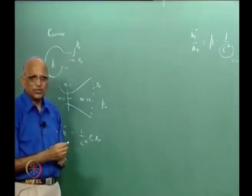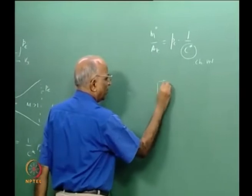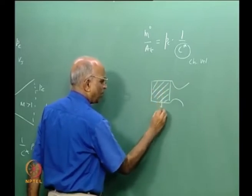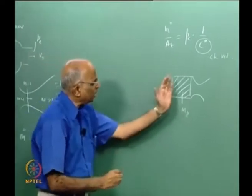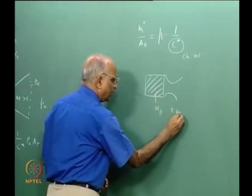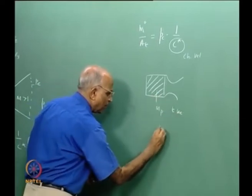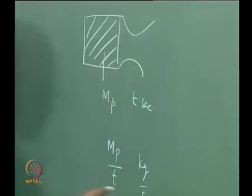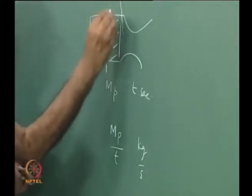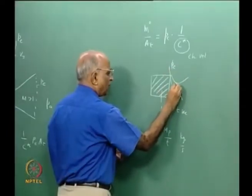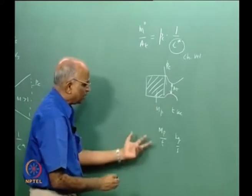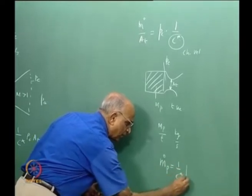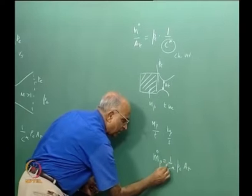Let us take one example to clarify. Suppose I have a rocket with propellant mass mp, firing steadily for t seconds. Then the mass flow rate through the nozzle is mp divided by t (in kg/s). If the chamber pressure is Pc and the throat area is At, I can write: mp/t = m-dot = (1/c*) × Pc × At. From this I can determine the value of c*.